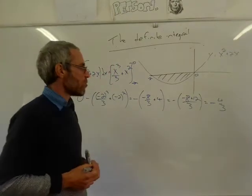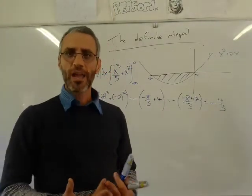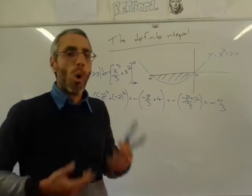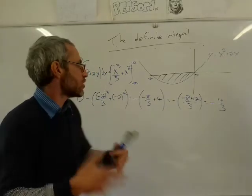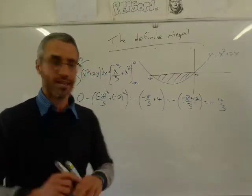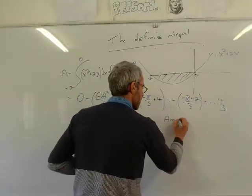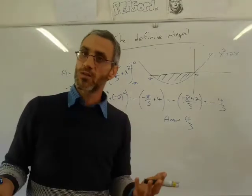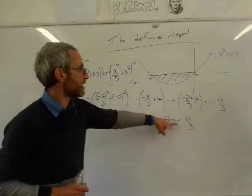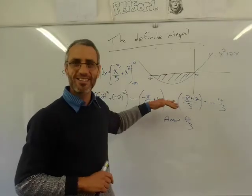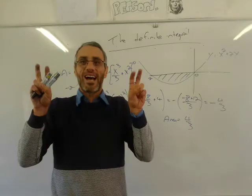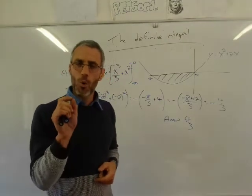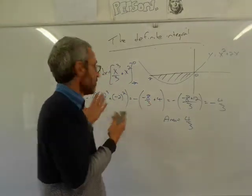Hang on — the answer is minus 4 over 3. Why is that a problem? We were calculating the area under the graph — how can area be negative? The reason we got a negative answer is that the area is under the x-axis. Areas above the x-axis are positive; areas below are negative. If asked to calculate the area under the graph, you must write the area is 4/3 (positive). That will become clearer when we learn why definite integrals are areas next week.